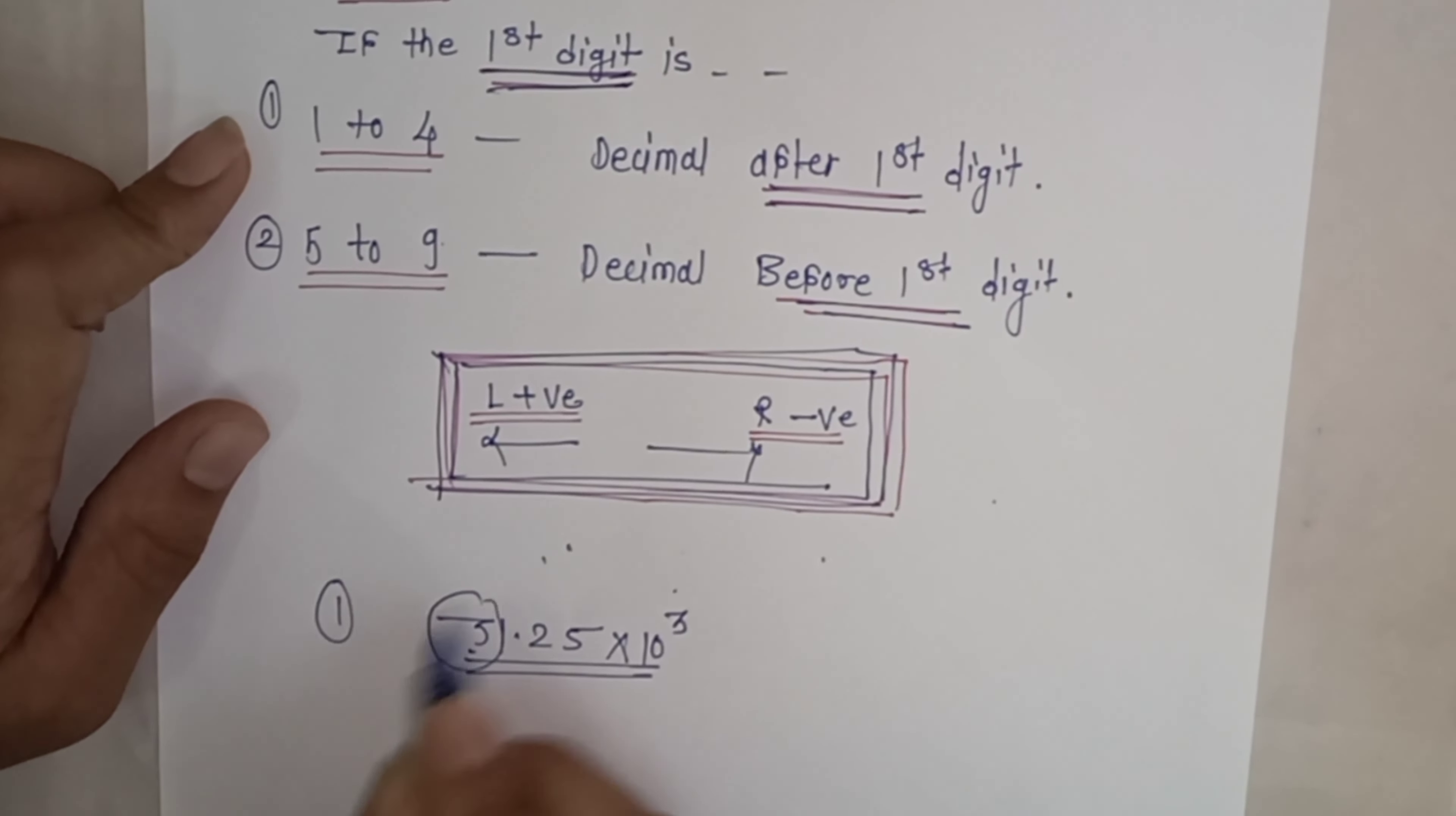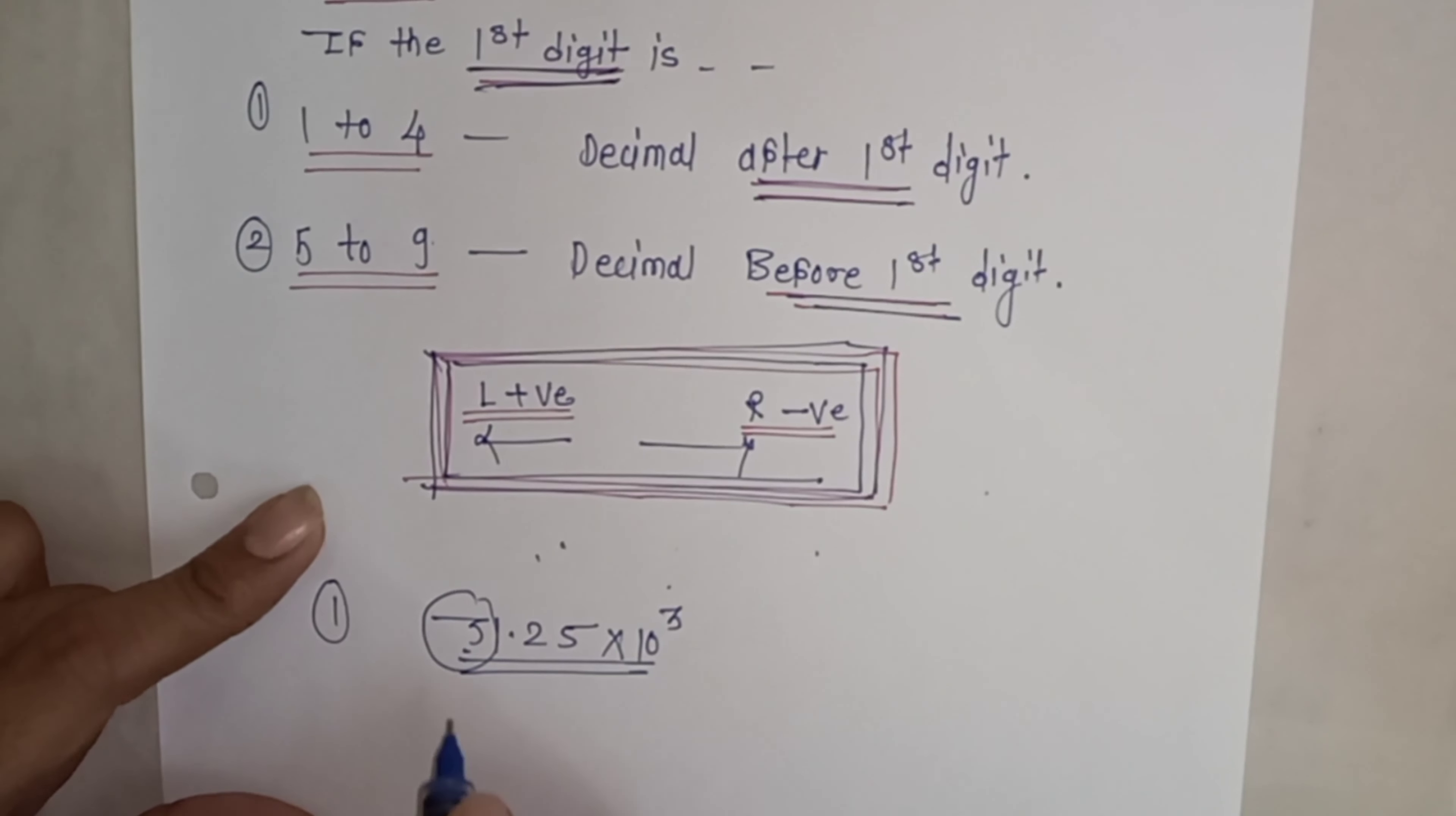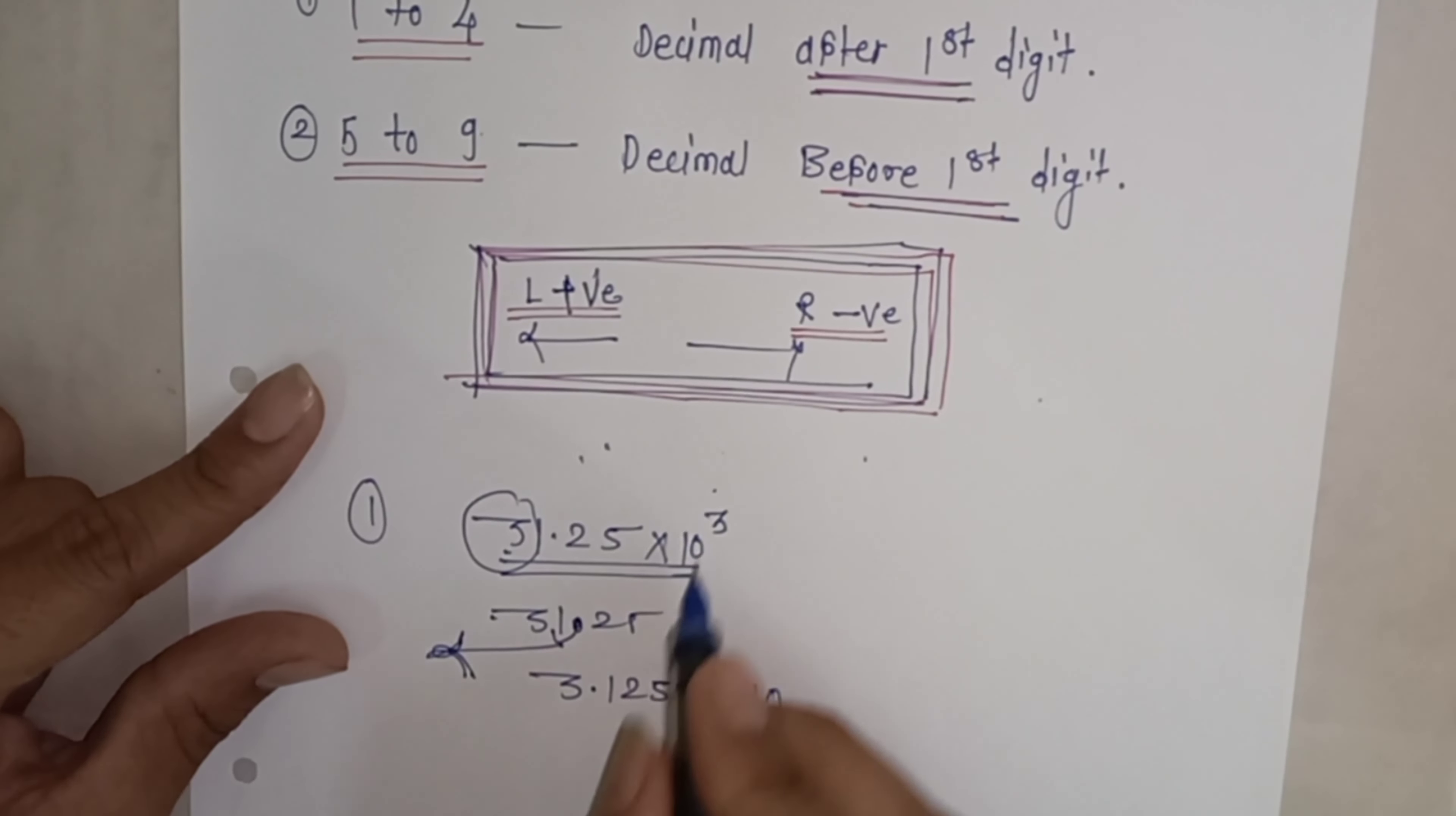Simply apply the conditions. The trick is: if the first digit is between 1 to 4, in this case the first digit is 3, which is obviously between 1 to 4. So the first digit is between 1 to 4. The condition says: give the decimal after the first digit. So we take 31.25 and directly make it 3.125. Now for the power of 10, the concept is: when we move the decimal to the right, that is from right side to left side, we add positive. How many places did we move? One place. So this becomes 3.125 × 10⁴.